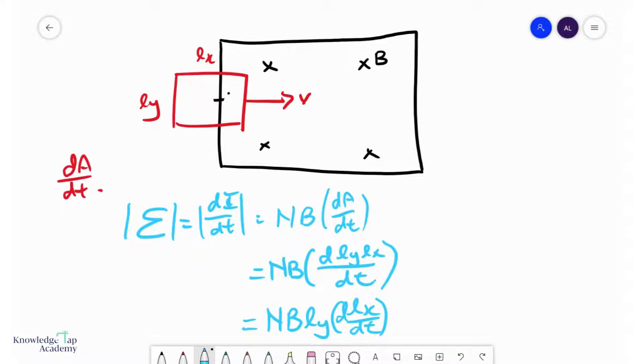And guess what? dLx/dt is simply the horizontal velocity. And so, this becomes N*B*L*V. And so, this is a very nice formula to know. Helps to calculate the EMF induced very quickly.